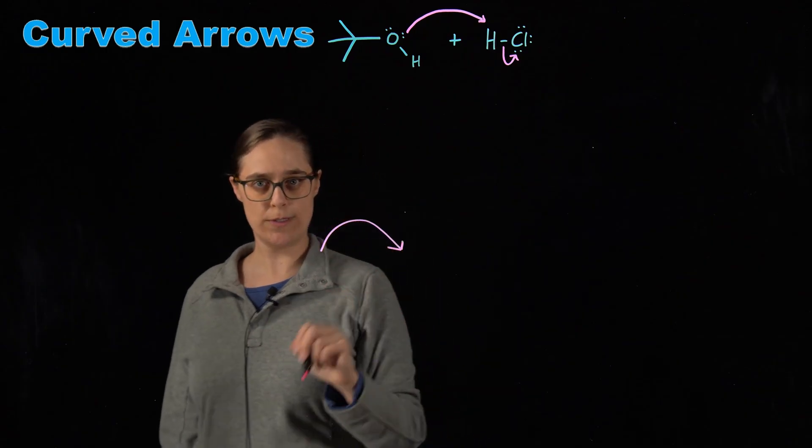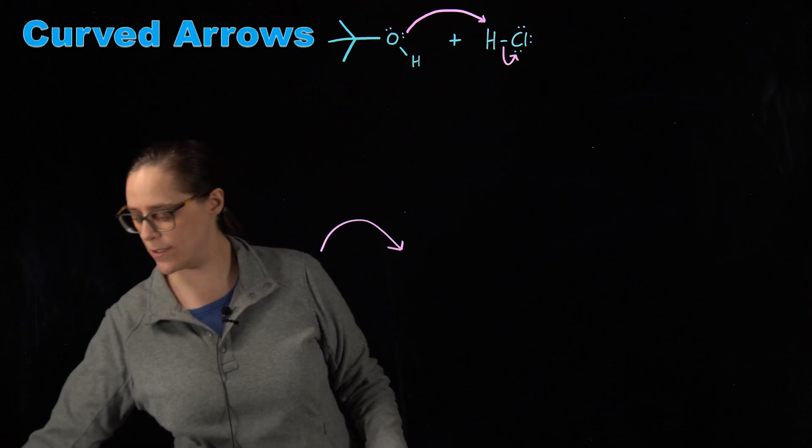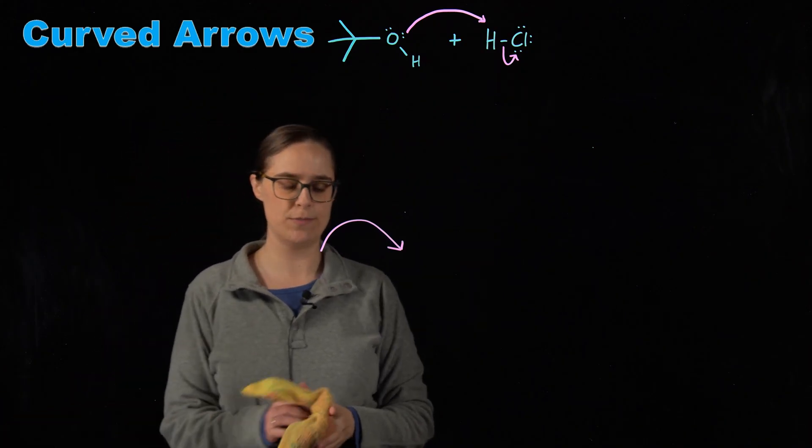These were both drawn with two heads. That implies two electrons are involved in the attack. So curved arrows are going to be showing electrons moving.